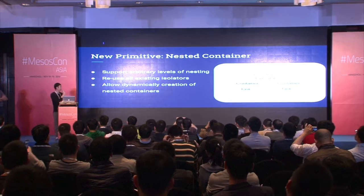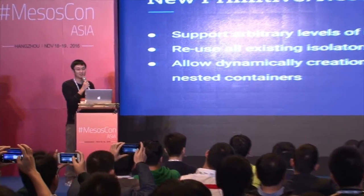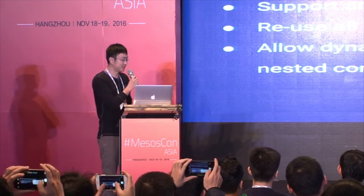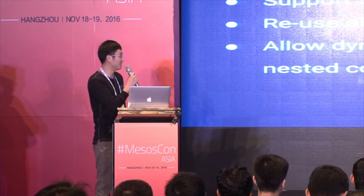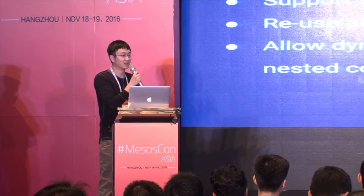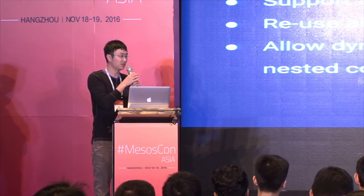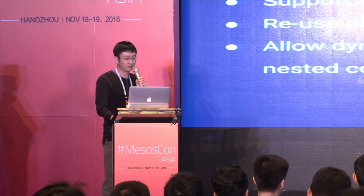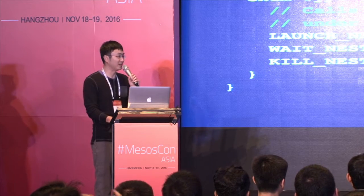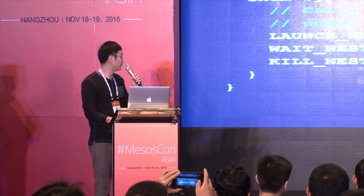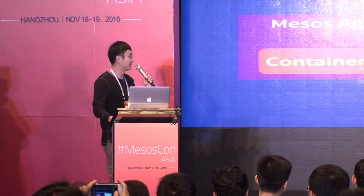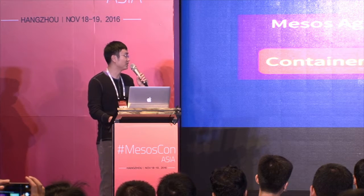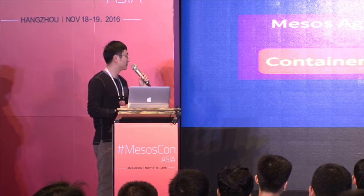We also added two primitive types: task group and nested containers. The main idea is that we support any level of nested containers. We added an API to the agent that allows launching and managing nested containers. For example, when the executor is already running, and wants to launch a nested container, it calls the agent. The agent has an API that allows you to launch a nested container and manage the top-level container.